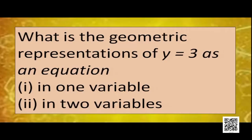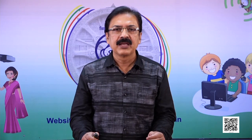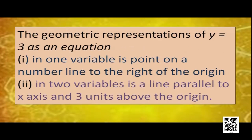Have a look at this question: what is the geometric representation of y = 3 as an equation? If we consider this as an equation in one variable, it has a unique solution, y = 3, and the graph is a point on a number line. In two variables, the geometric representation is a line parallel to the x-axis and 3 units above the origin, since y = 3.